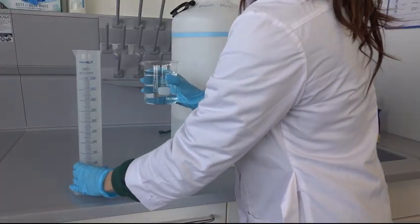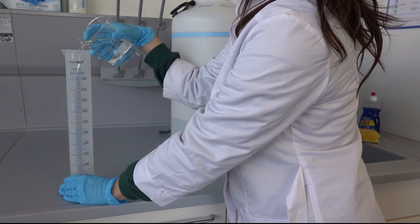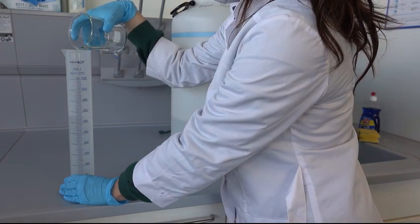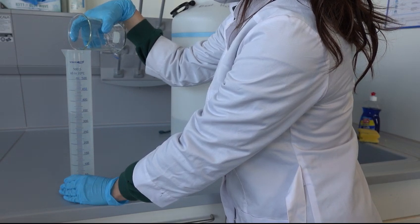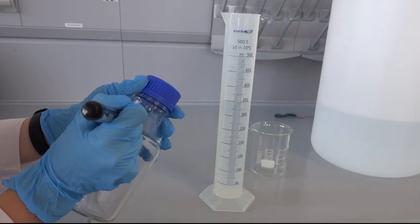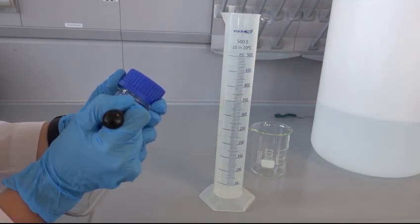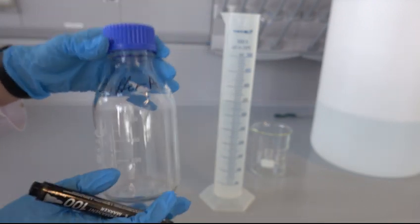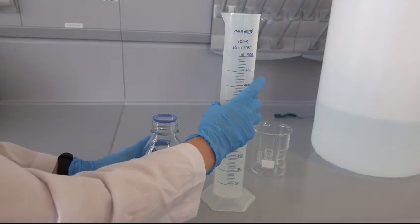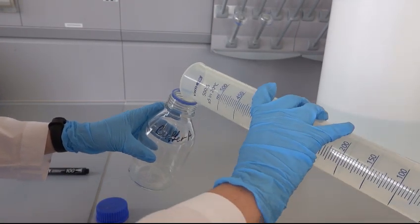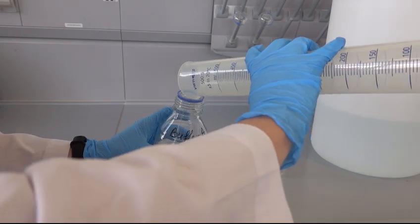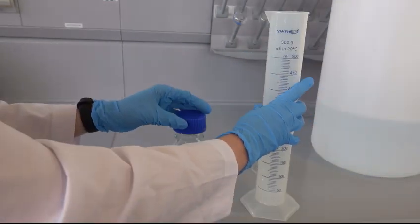Before adding the reactants, we are going to measure 350 ml of water and transfer it into a Duran bottle. Don't forget to label it before the preparation. The bottle is then transferred into the fume hood where the reactants will be added.